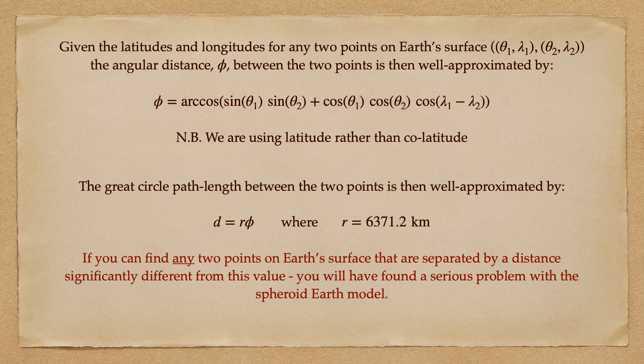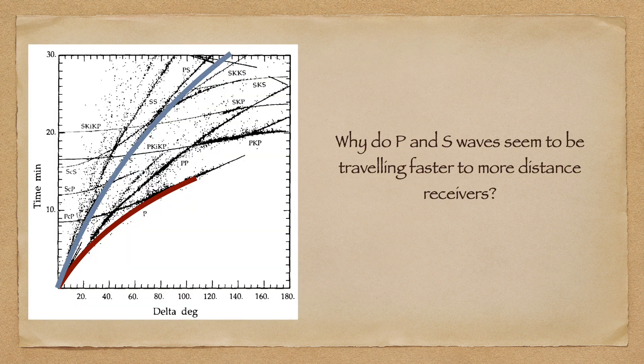For any flat earthers in the audience wondering how one obtains angular distance between two sites, here's the formula. It should be carefully noted that all distance observations available to us, including and especially those due to seismic data, agree with spherical distance formulae. Returning our attention to this phase diagram, it's interesting to note that the further away the receiver is from the source, the faster the wave seems to have traveled to get there.